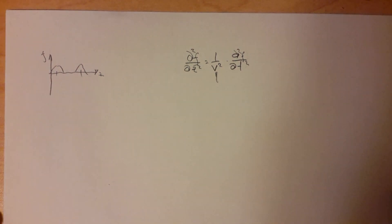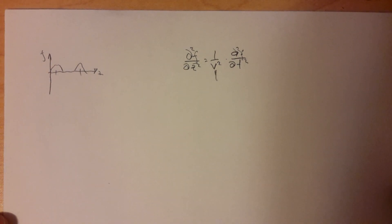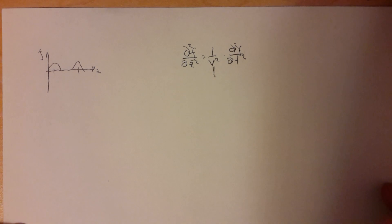What about electromagnetic waves? They are our main object of study here. We can use Maxwell's equations to derive the wave equation for electromagnetic waves. We are going to start by considering a simple media, which means that we have no charge density and no current density.